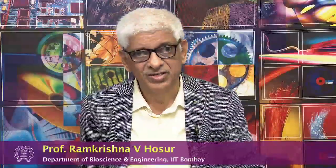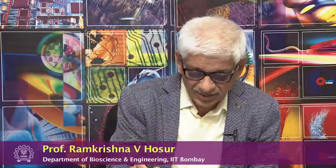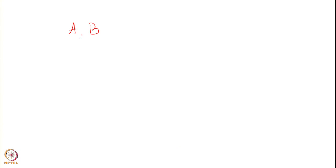So far we are considering 2 spins, A and B, both with I equal to half. Each one of them, in the absence of any coupling, has one line. When there is a coupling, we represent this such that each line is split, and the separation is J in both cases.